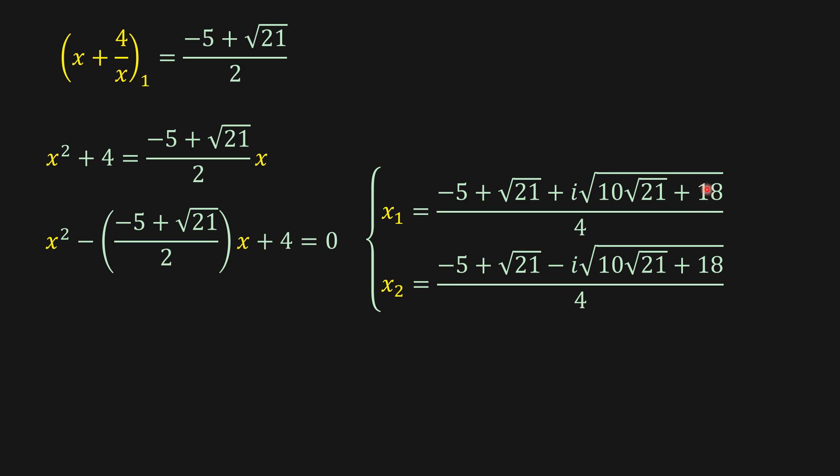And then this to the power of 2 here minus 4 times ac. So after some simplifications we're going to get to this one. So these are imaginary solutions.